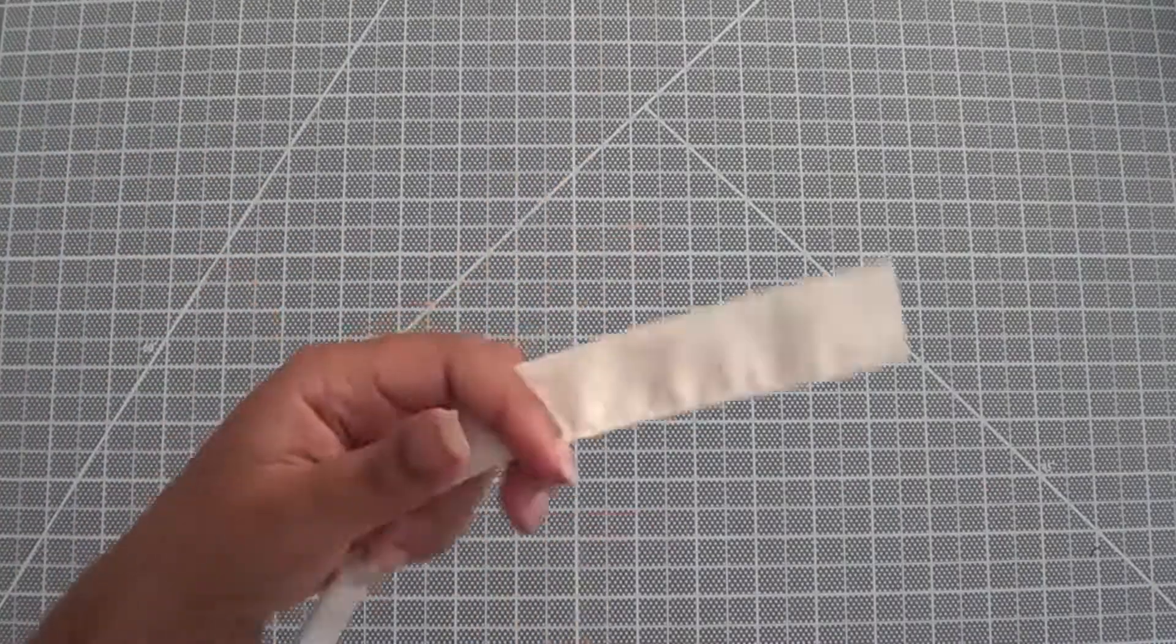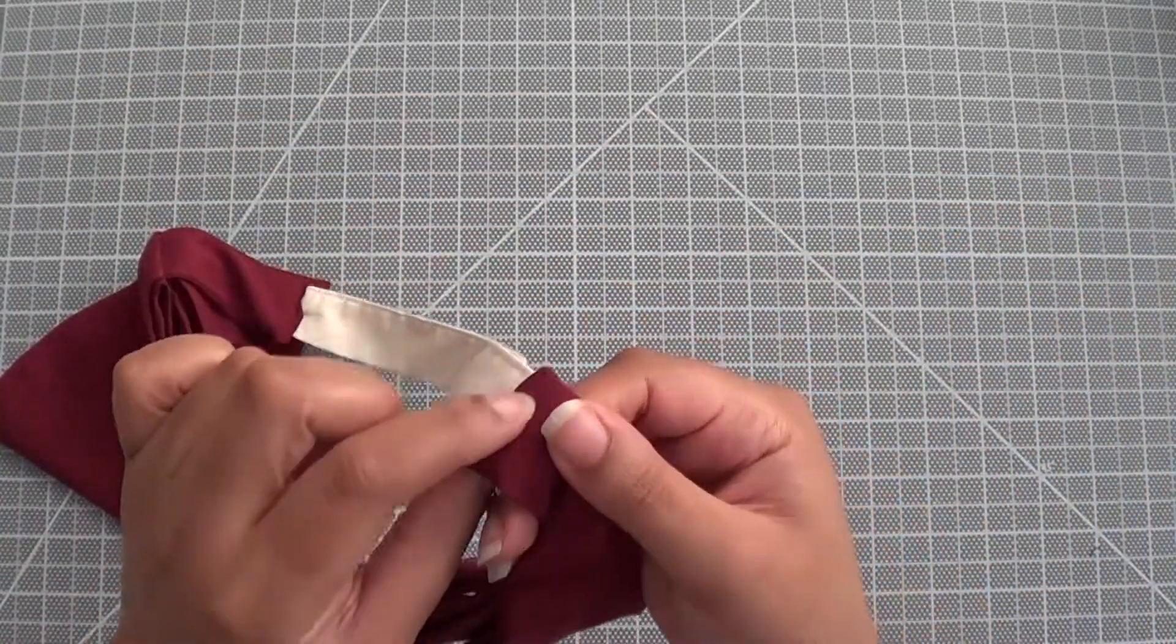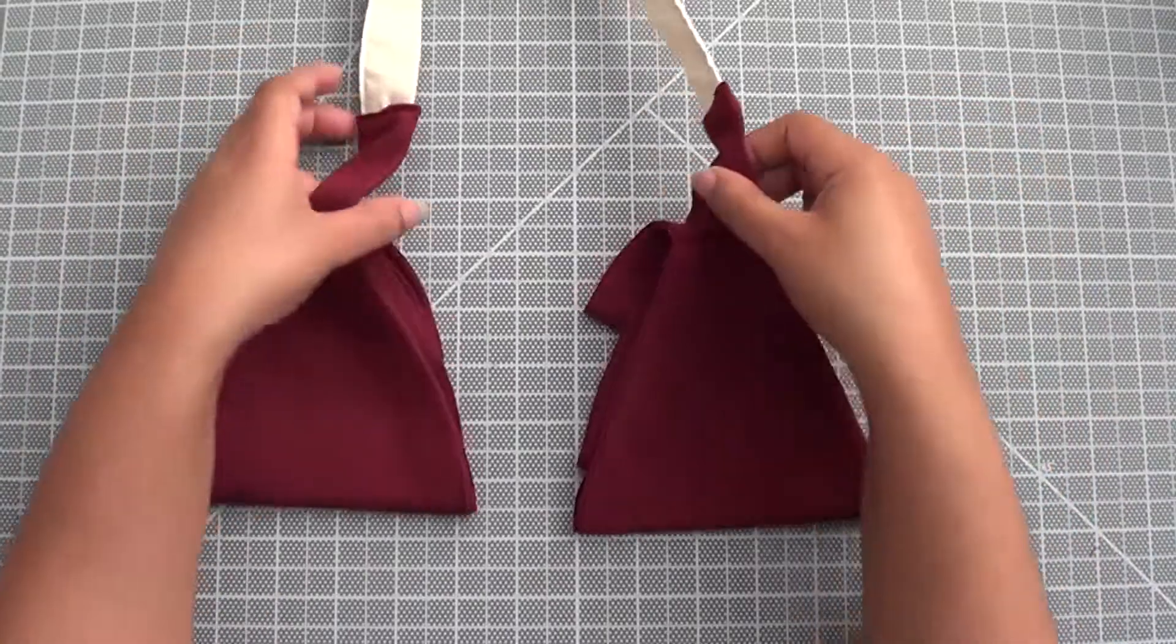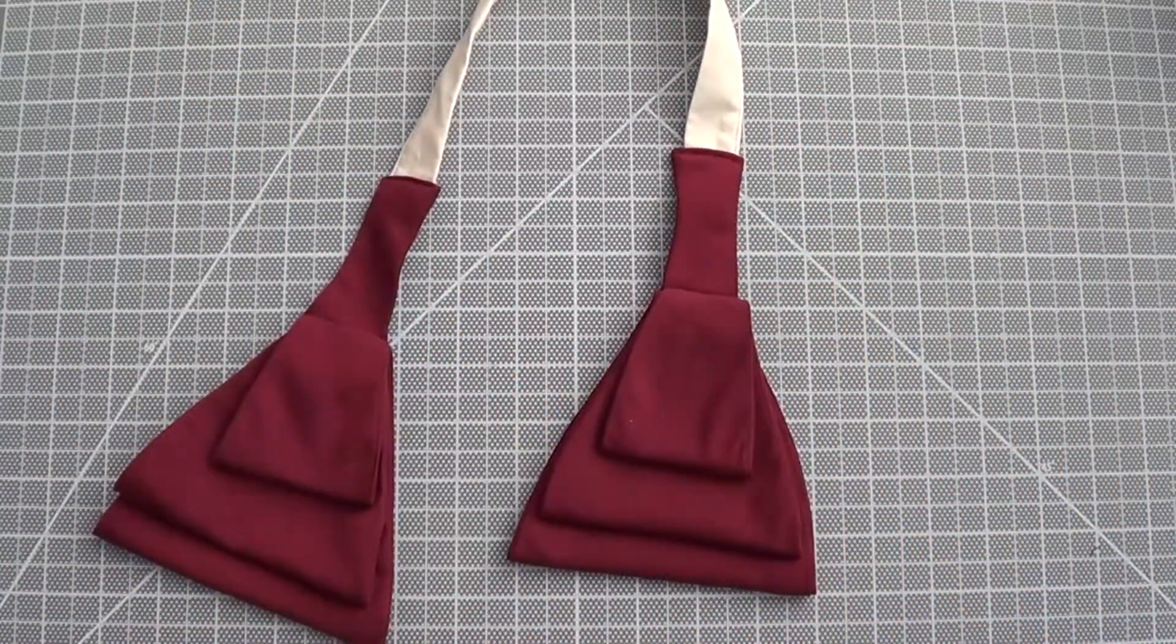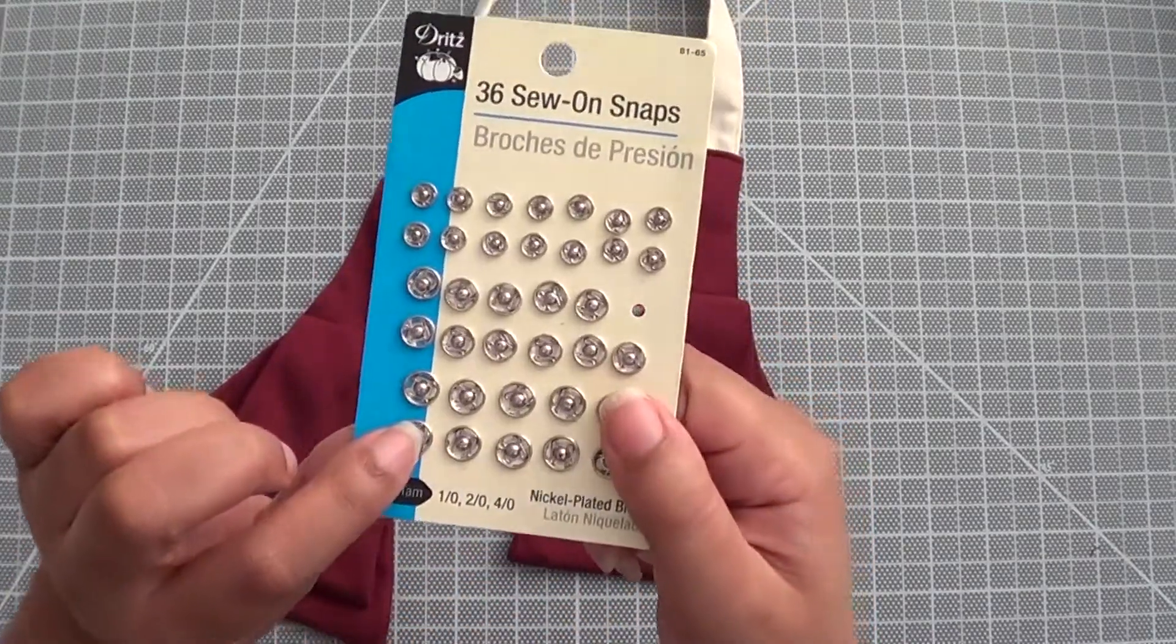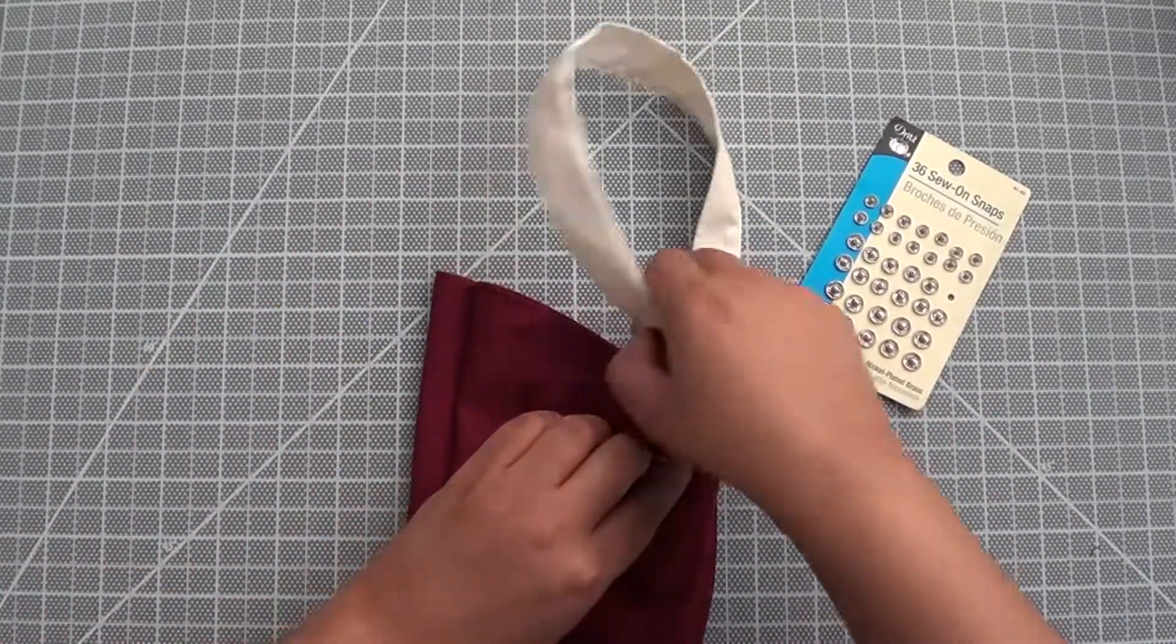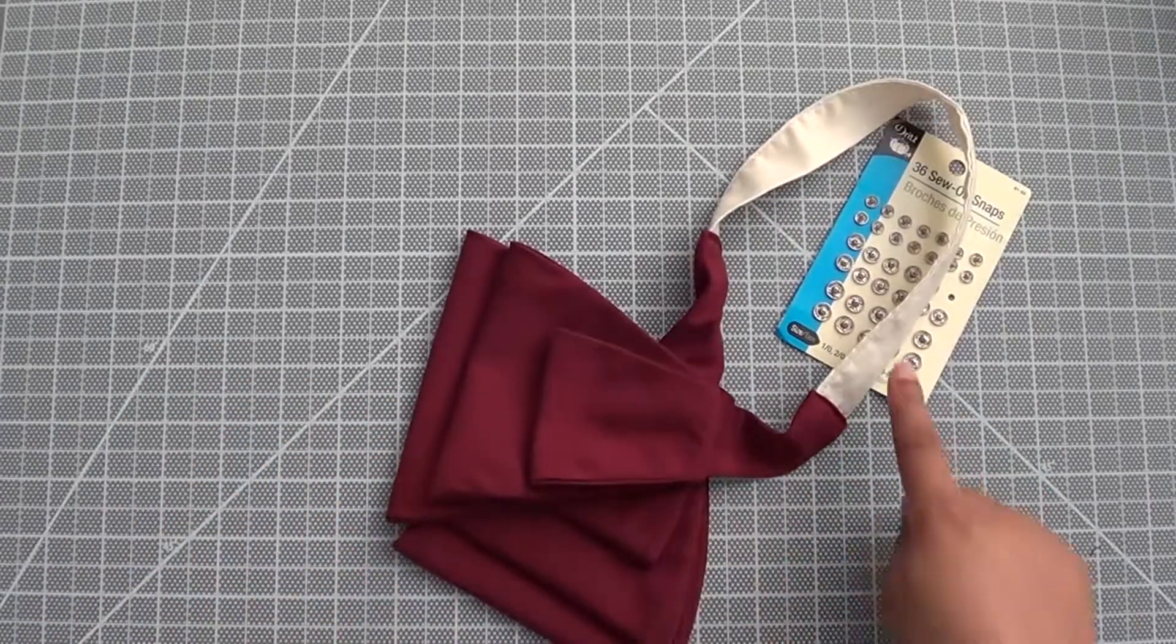Alright so I made my strap and I went ahead and folded the edge in, tuck the strap in and sewed it down on both sides. Now what we have to do is get your snap. I'm gonna be using the biggest one and then you have to attach it, one here and one here so that it will snap on. I'm gonna go ahead and attach this.